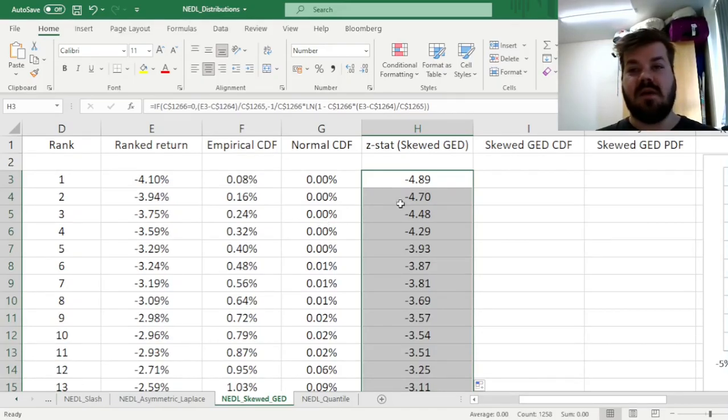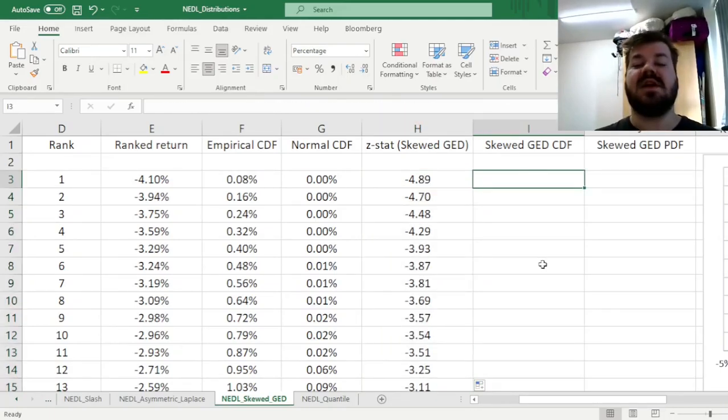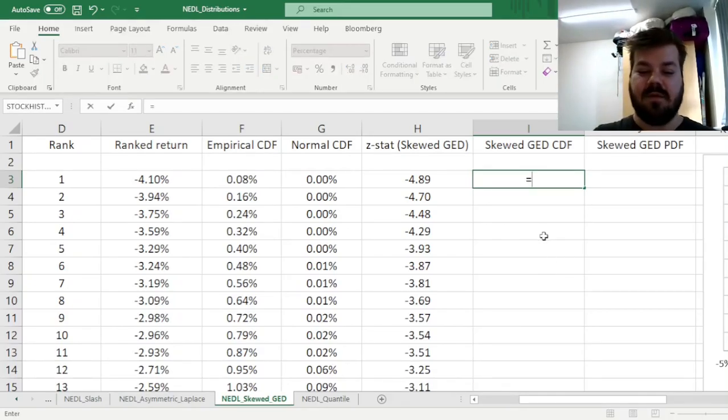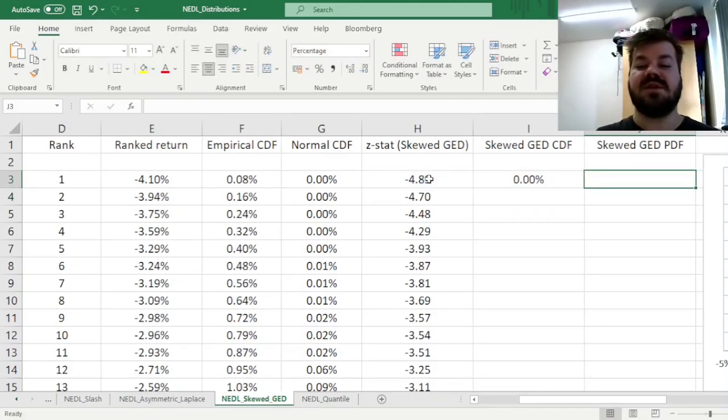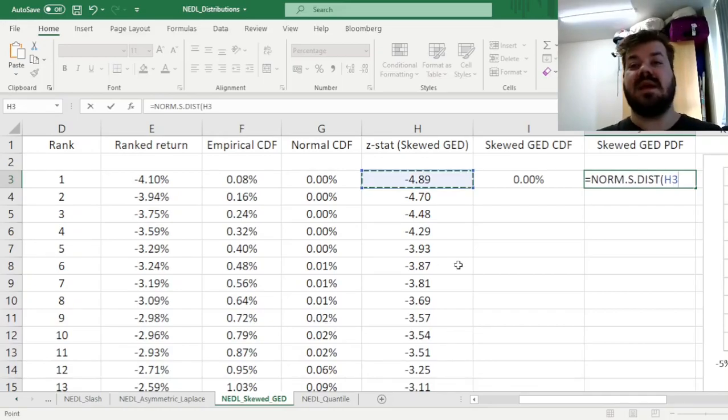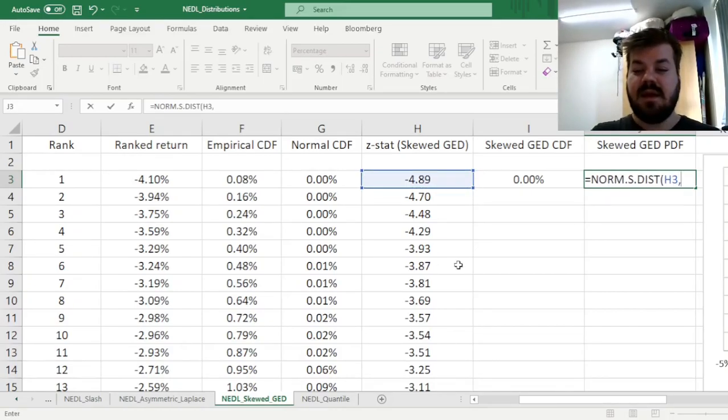That then we'll use to calculate our skewed GED, skewed generalized error distribution cumulative and probability density functions. So for the skewed cumulative distribution function, it's very straightforward, we just need to input the standard normal distribution of the Z-stat, and we need it to be cumulative, as it's a CDF. And for the skewed generalized error distribution PDF, we need to start in a similar fashion, norm as dist, input the Z-stat we've just calculated, input 0, as it's a probability density function, not the cumulative function we have calculated over here. And then, as per the formula, we need to adjust it by the following expression.